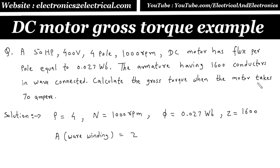Calculate the gross torque when the motor takes 70 ampere. So we have to find torque T at armature current Ia is equal to 70 ampere.